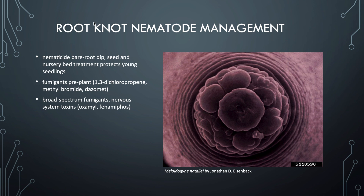There are various ways to manage root-knot nematodes. Since the industrial revolution, nematocides have been used in the form of bare root dipping and seed and nursery bed treatment to protect young seedlings, mostly in vegetable crops. There are also fumigants applied before planting — quite destructive chemicals that are very harmful to all life forms within the soil. Broad-spectrum fumigants can also be used, but these are nervous system toxins being phased out because of their severe danger to human and animal health as well as many other life forms.